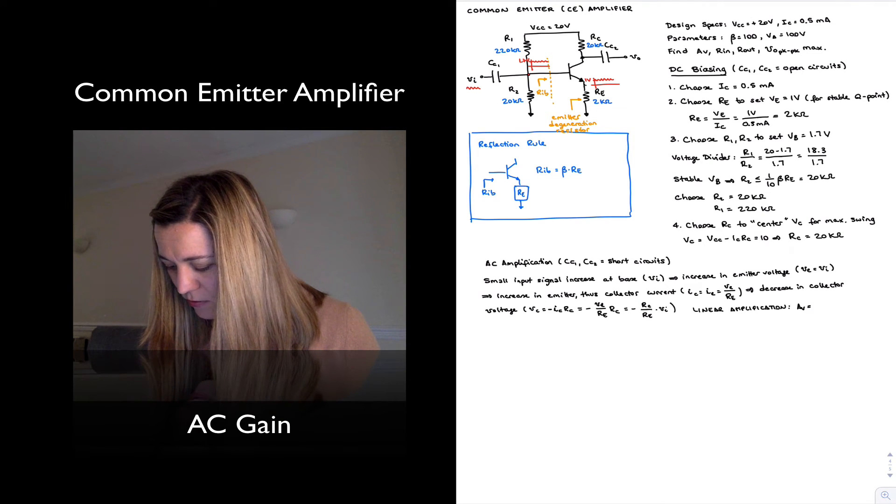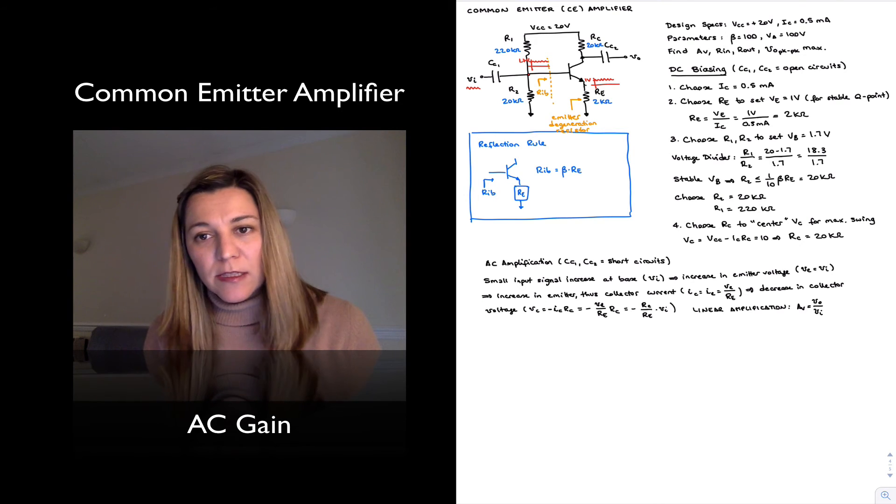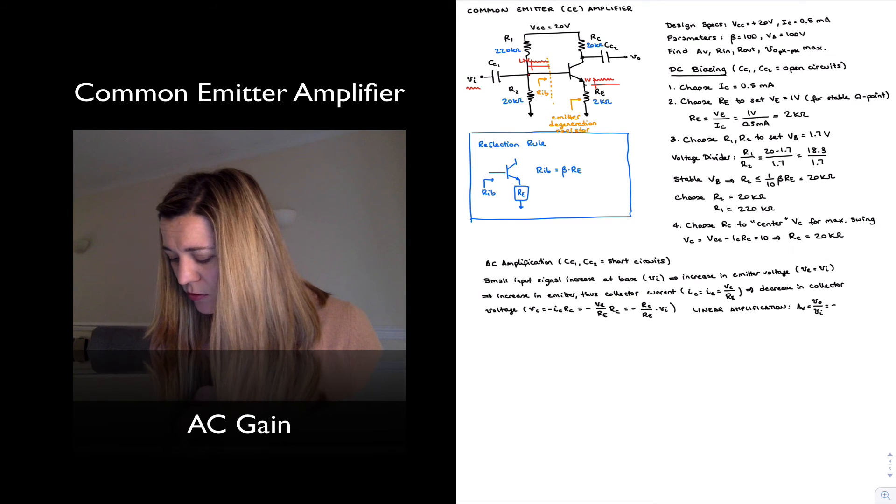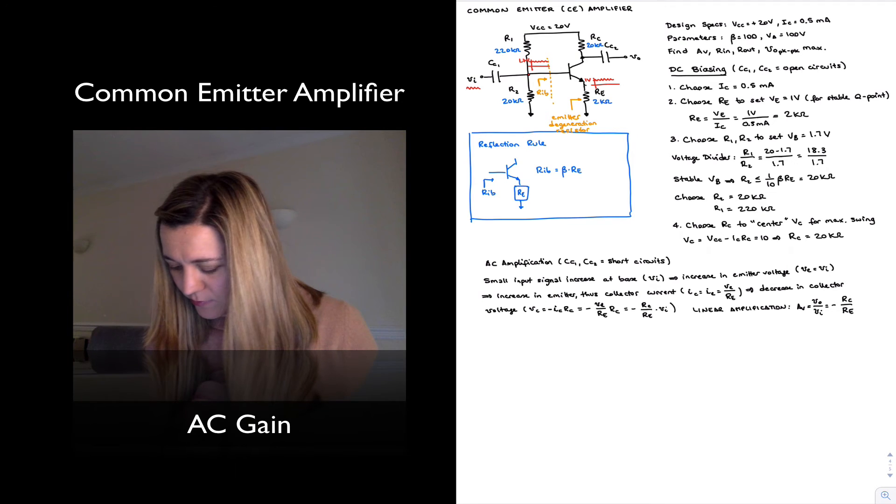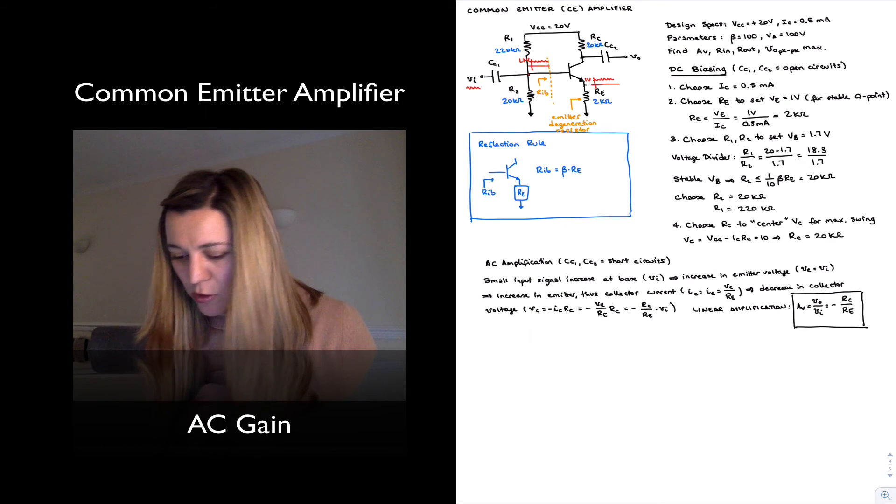In this case, an inverted change, so an increase in input voltage causes a decrease in output voltage. That's what the negative sign represents. And then it's also scaled by a factor of RC divided by RE. And so my voltage gain, which is defined as the ratio of delta Vout over delta VIN, my AC voltage gain, is equal to negative RC divided by RE. That's the expression for the gain of a common emitter amplifier.